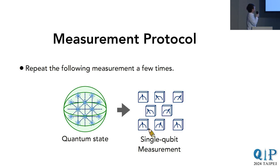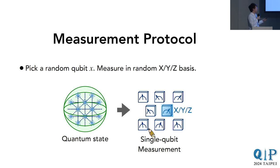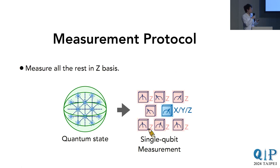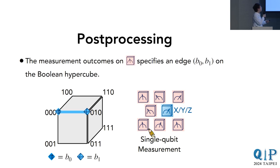The measurement protocol is the following. We repeat this measurement procedure a few times. We are given the state rho. We randomly choose a qubit x, and for that qubit x we measure in a random Pauli basis—a random X, Y, or Z basis. For all the remaining qubits, we measure in the Z basis. We simply repeat this for multiple times, each time choosing a qubit, measuring it in a random X, Y, Z basis, and measuring the rest in the Z basis.